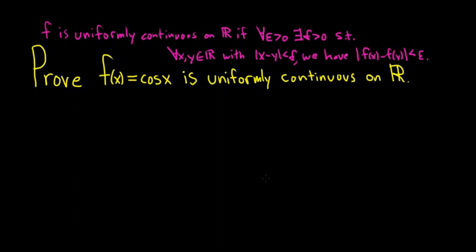And the key difference between continuity and uniform continuity is that in uniform continuity delta is only allowed to depend on epsilon. It's not allowed to depend on anything else.